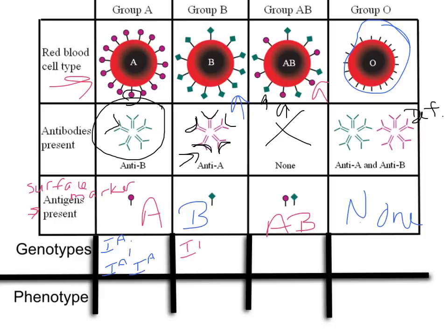People with type B blood are going to be either I^B little i, or I^B I^B. People with type AB blood — their only option is to be I^A I^B. If they have both surface markers, they have to have both of those alleles. People with type O blood are going to be recessive — they cannot have any I^A or I^B alleles, otherwise they would have some surface markers.